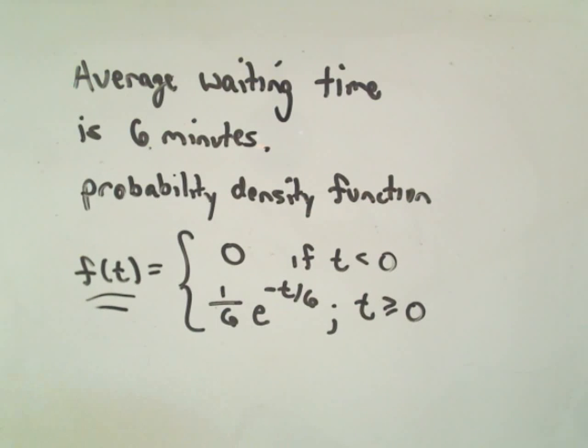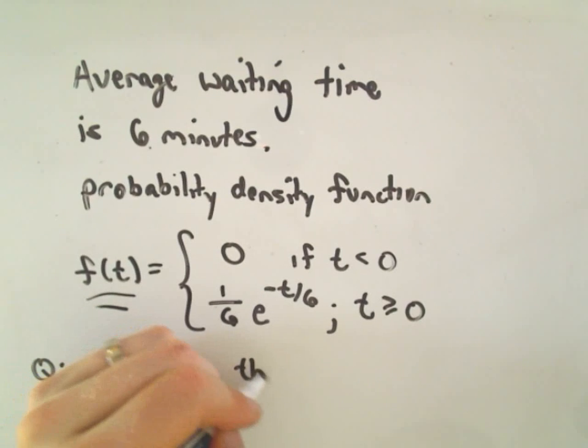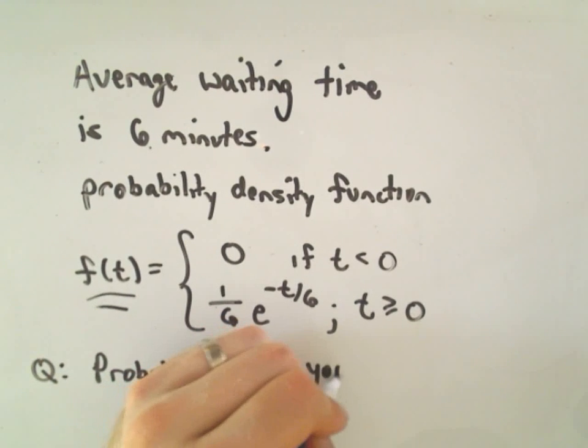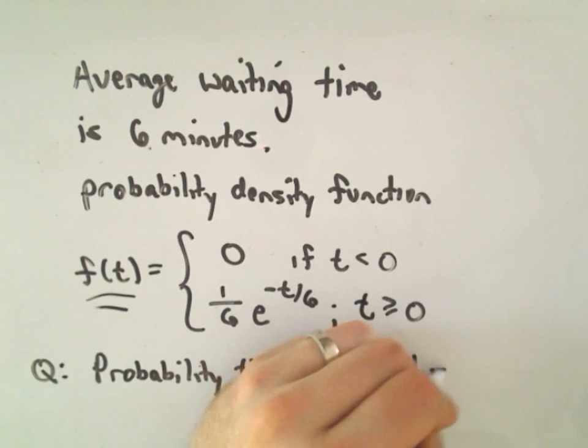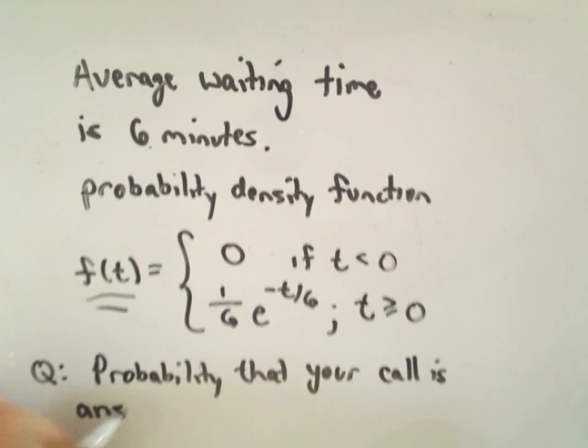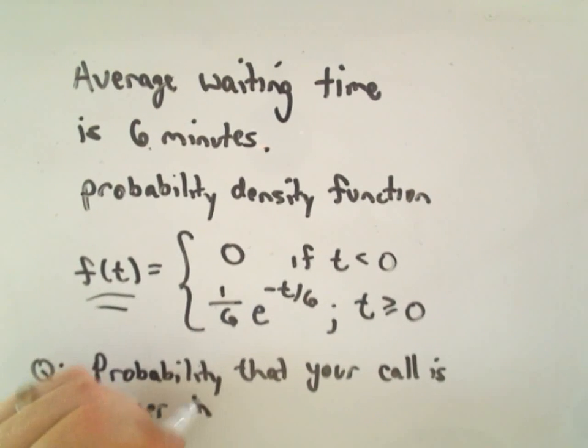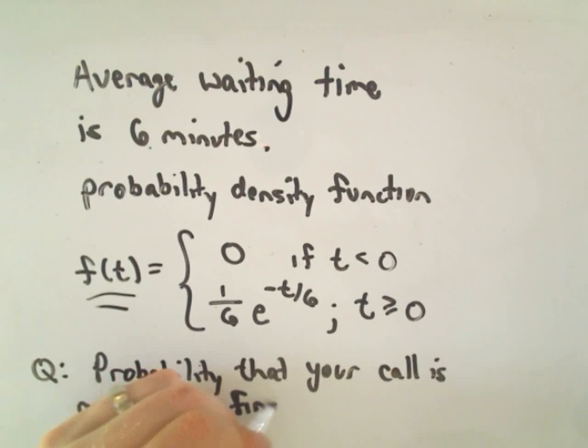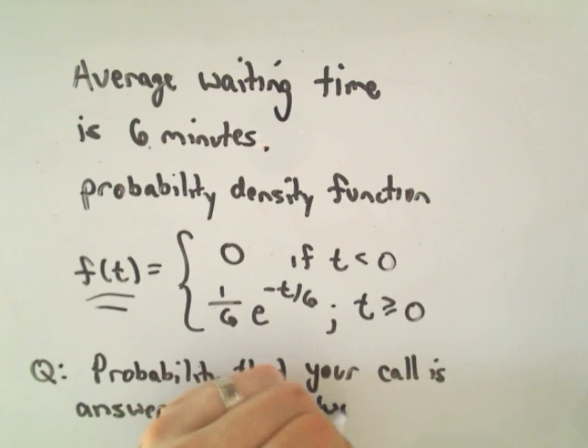So let's do maybe just one quick question. Suppose the question is, okay, so if we know that your call, the average waiting time is six minutes, let's find the probability that your call is answered in the first two minutes.